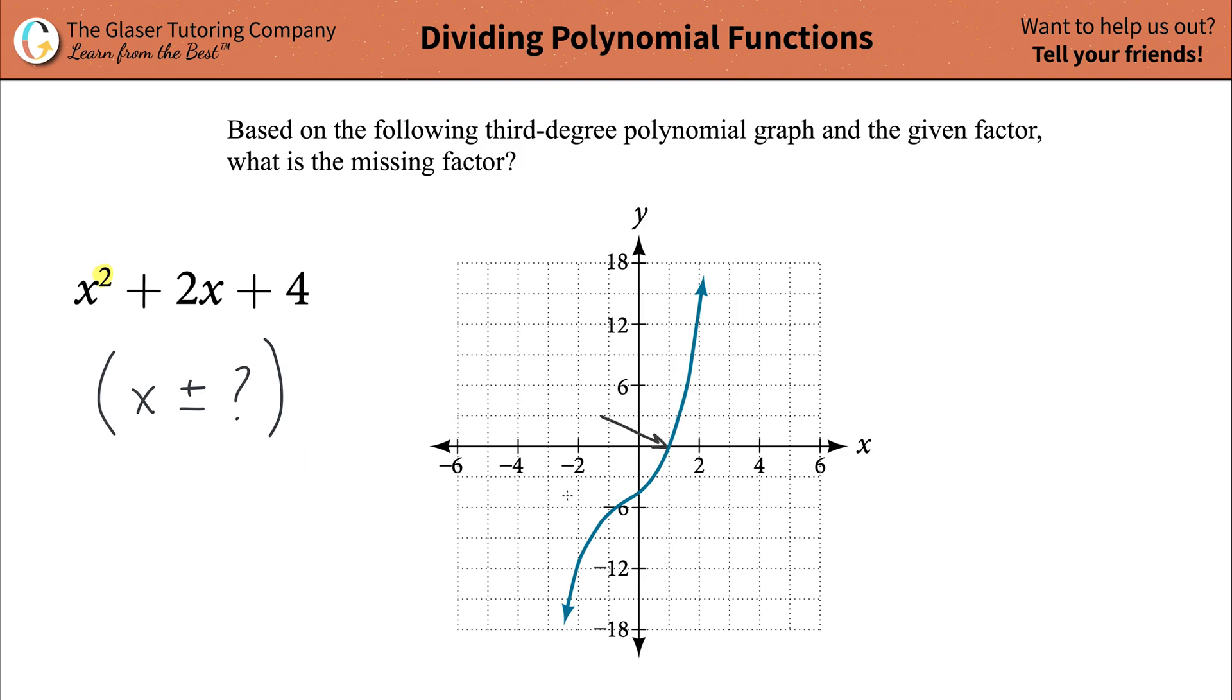So you notice that this is x is equal to one. So you can write that out, x is equal to one. But this is not in factored form. This is the root. What you have to do is you have to subtract one from both sides so that you set this baby equal to zero.